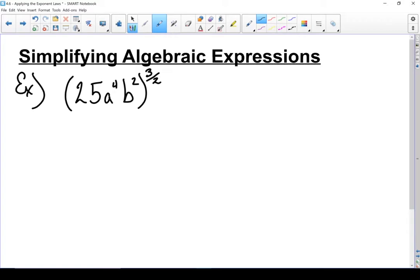Now here's one that looks like fun. 25a to the power of 4, b squared, and all of that is taken to the 3 halves power. I could take that fractional exponent and convert everything into a radical. And in fact, I'm going to have to do that later on for parts of it.